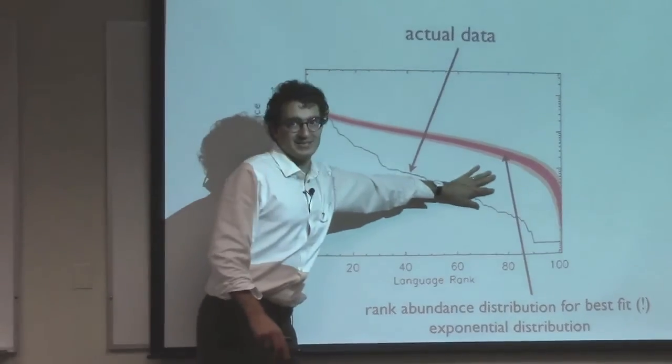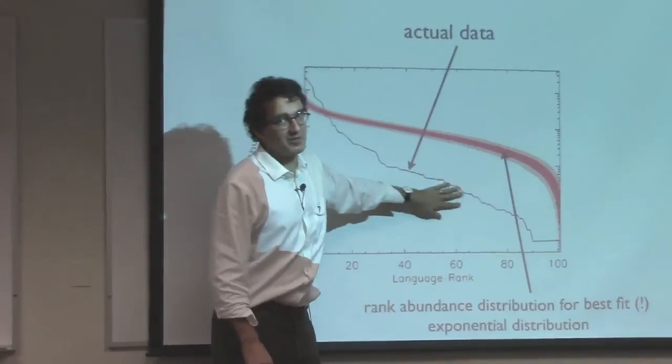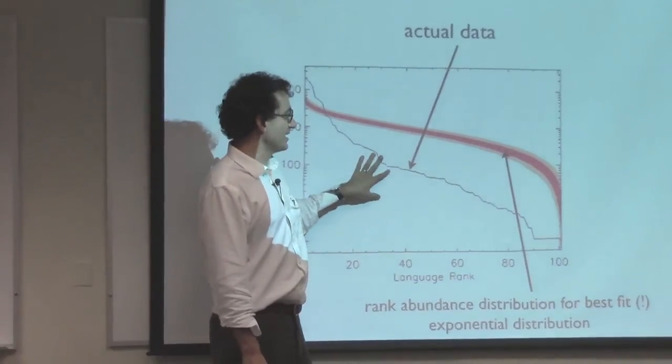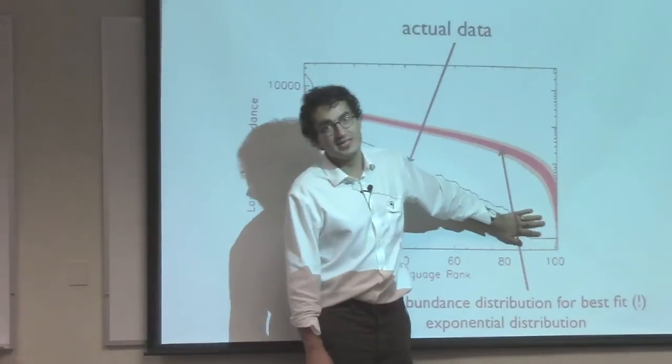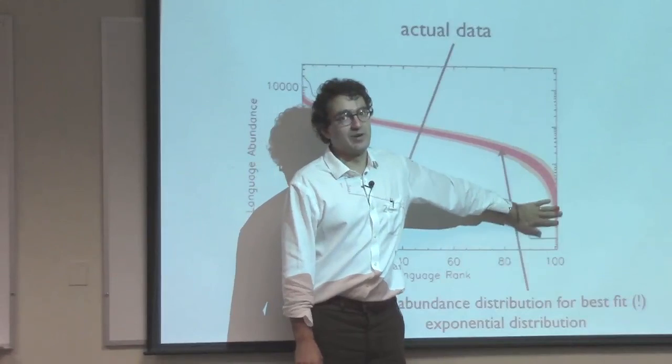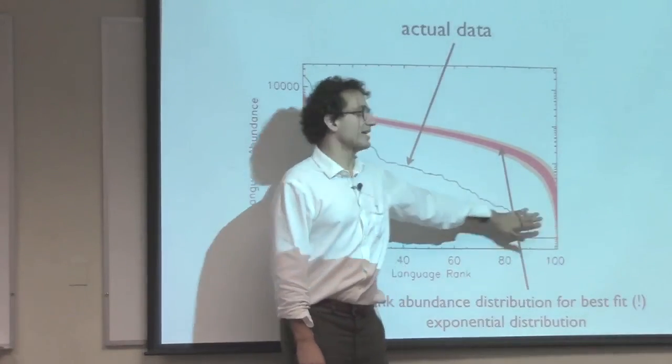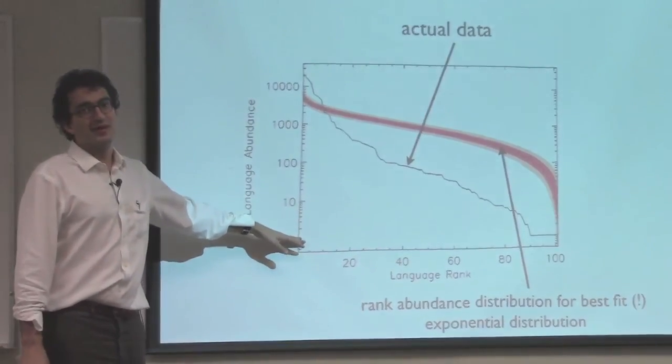It radically under-predicts these really extremely popular languages. It's unable to, in other words, reproduce the fact that there are languages like C and Python that are extremely popular. It over-predicts this kind of mesoscopic regime. It over-predicts the moderately popular languages, as also it does over-predict those really rare birds, those really low-ranked languages, with very few examples in the archive.